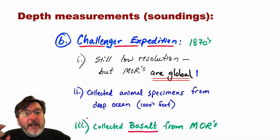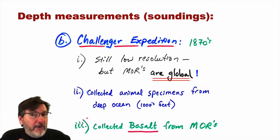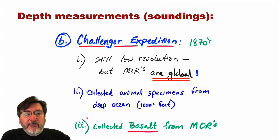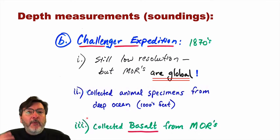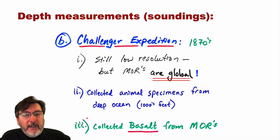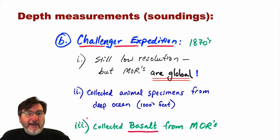It was always basalt — glassy, broken, and very altered. They didn't understand why. They had no clue. They looked at this and said, 'Why is it always basalt? Why not granite? Why not sedimentary rock? Why not metamorphic rock like we see on the continents? Why is it always this distinctive iron- and magnesium-rich, silica-poor igneous rock?' No clue why — just another discovery, everybody scratching their heads.